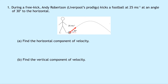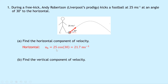Question one says: during a free kick, Andy Robertson kicks a football at 25 meters per second at an angle of 30 degrees to the horizontal. Part a says find the horizontal component of the velocity. To find the horizontal component, remember we use cosine of the angle, so u_h equals 25 cos 30, which equals 21.7 meters per second.